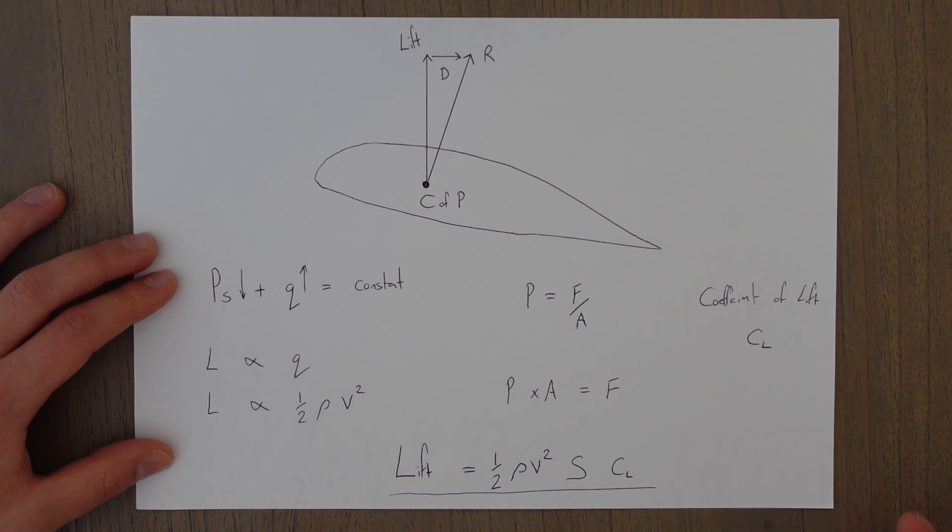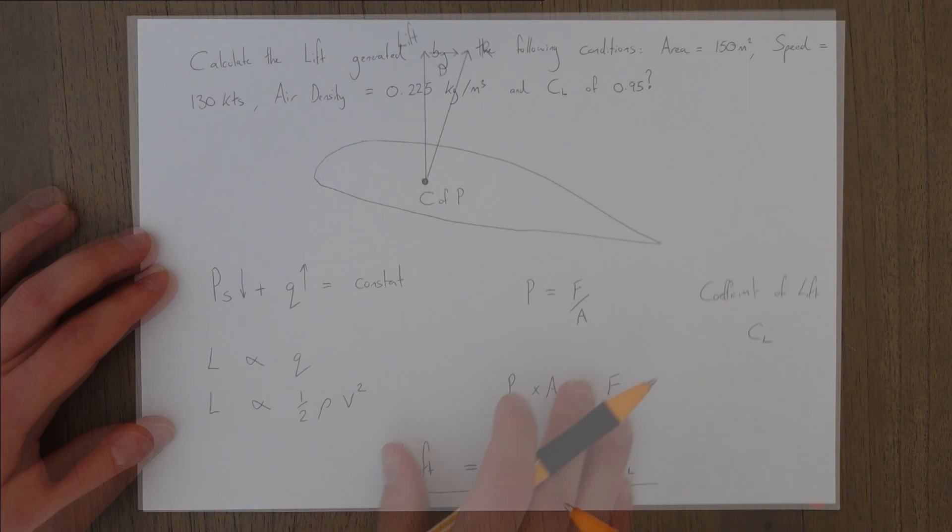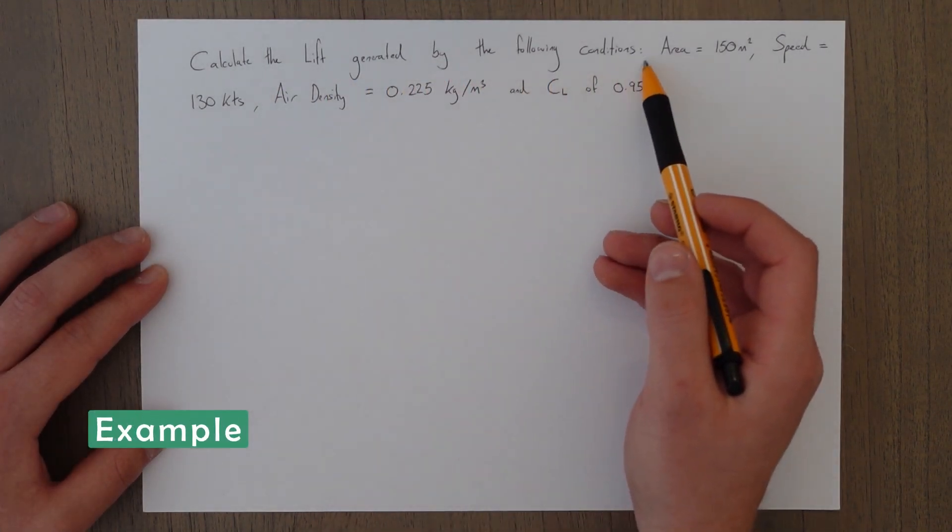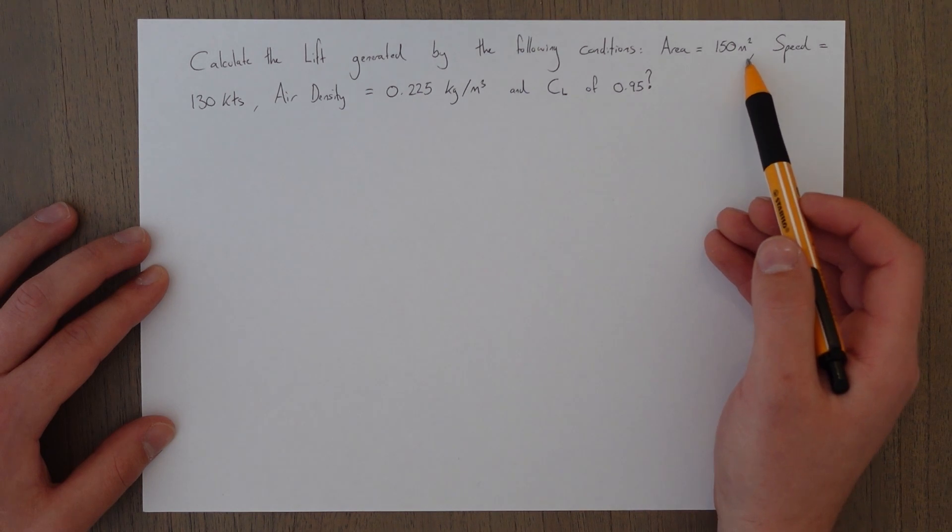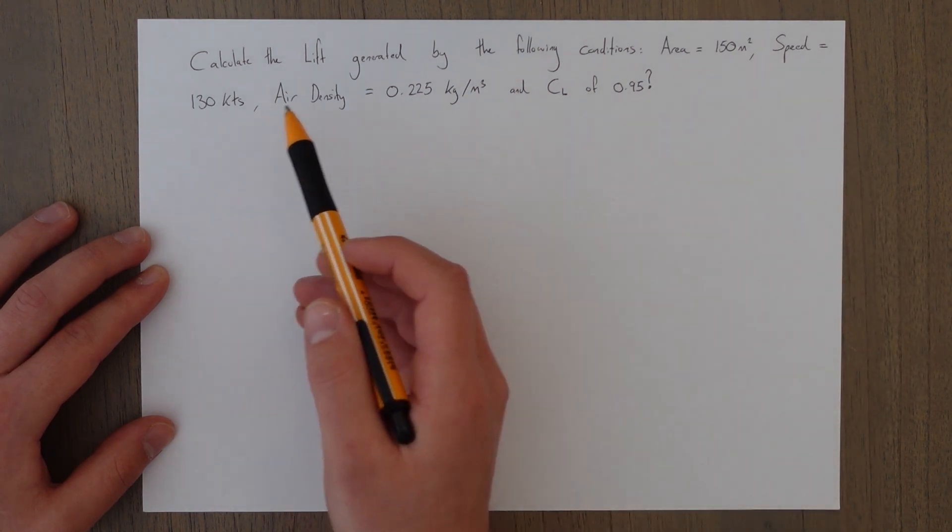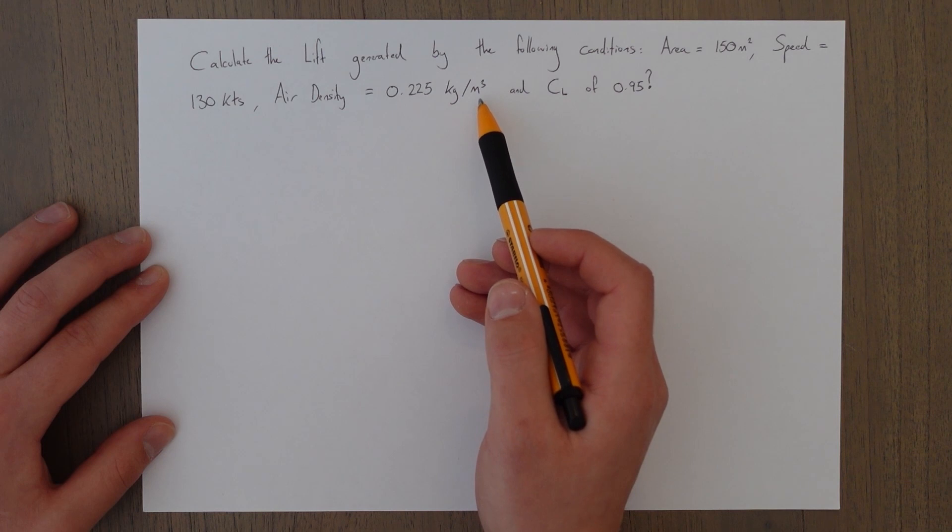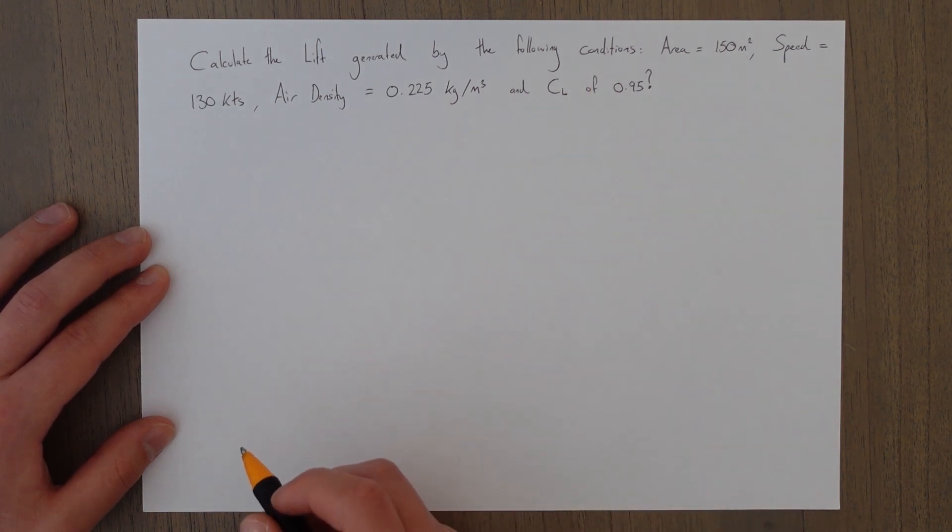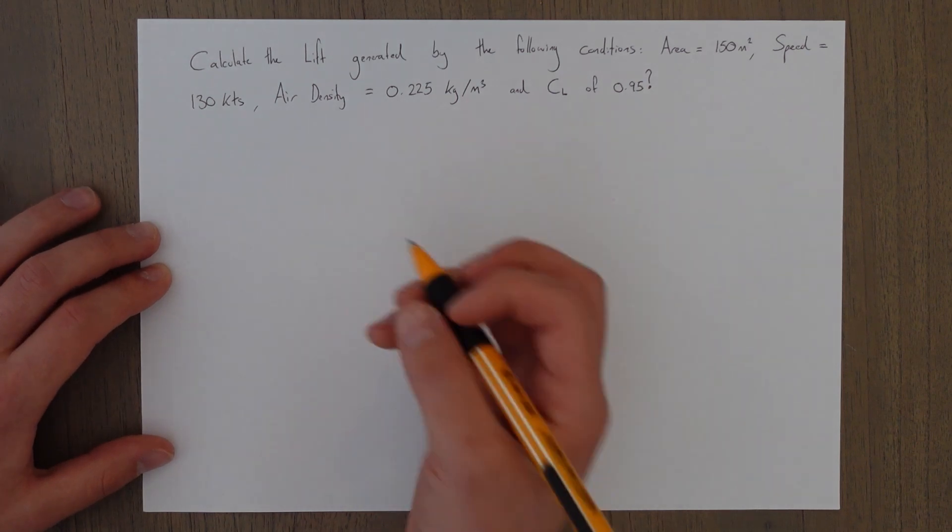This lift equation can be used to answer some very simple questions such as this: Calculate the lift generated by the following conditions. Area 150 meter squared, speed 130 knots, air density 0.225 kilograms per meter cubed, and a coefficient of lift of 0.95.